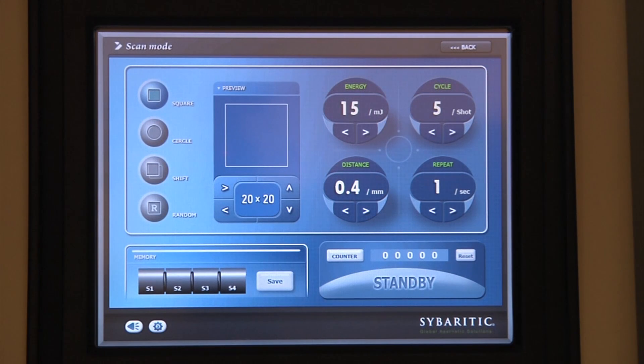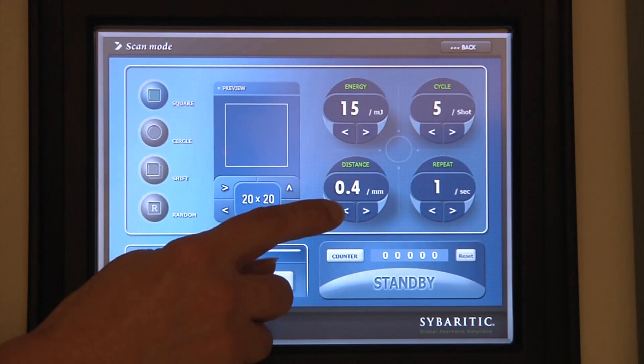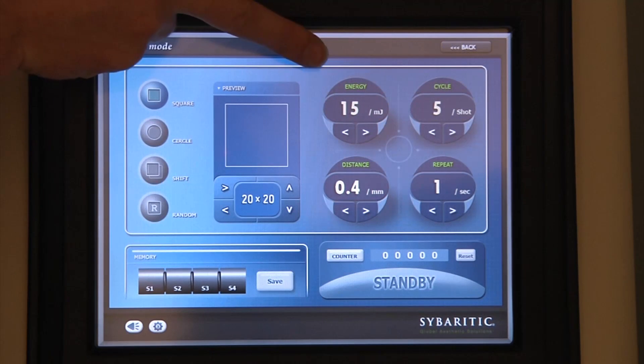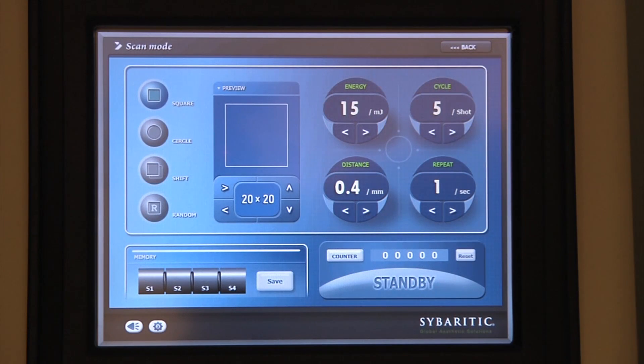And actually we want to provide more coverage to the skin. The way I would set this is to have a very small distance between our microthermal zones so that we can affect a maximum coverage. However, I would decrease the energy settings to 15 millijoules in order to affect a more superficial treatment.